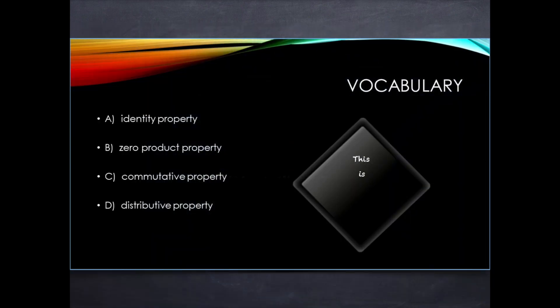Our vocabulary today, and this is essential knowledge. The identity property, the zero product property, the commutative property, and the distributive property.